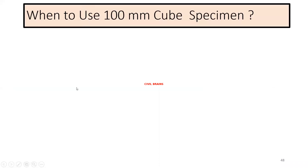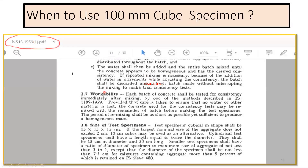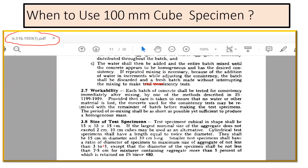The next point is when to use a 100 mm cube specimen and when to use a 150 mm cube. If you refer to IS 516:1959, it says the test specimen shall be 15 cm by 15 cm by 15 cm — that is 150 by 150 by 150 mm — when the largest nominal size of aggregate does not exceed 20 mm. The 100 by 100 by 100 mm cube can be used if the aggregate size does not exceed 19 mm.